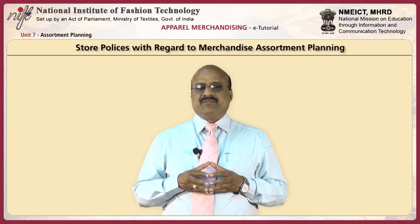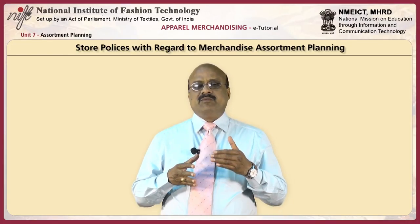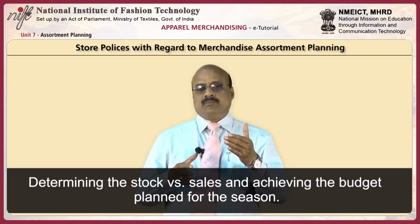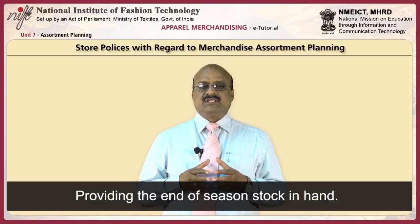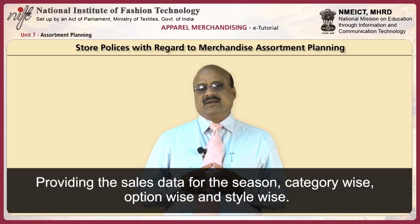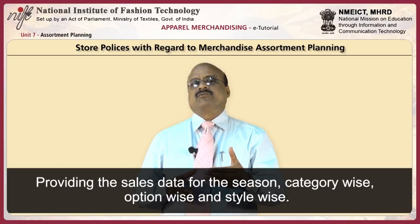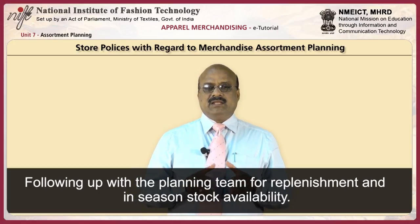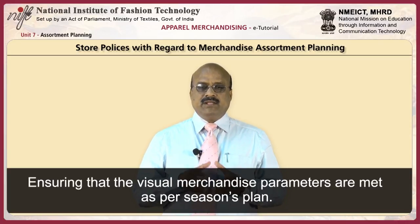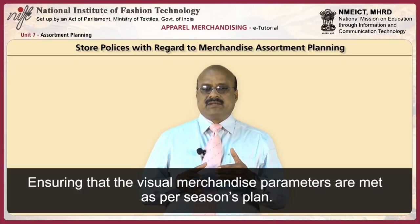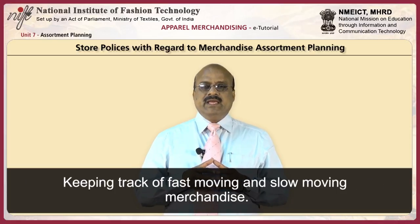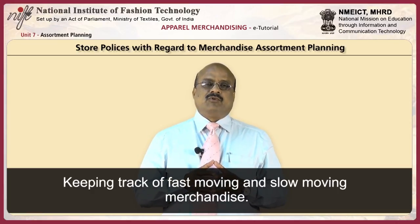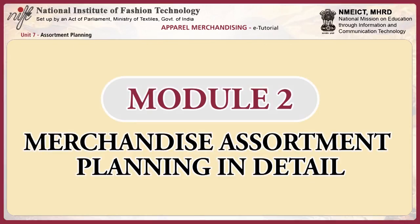Stores play a very major role in assortment planning by determining stock versus sales and achieving the budget planned for the season, providing end-of-season stock on hand, providing sales data for the season category-wise, option-wise, and style-wise, following up with the planning team for replenishment and in-season stock availability, ensuring that visual merchandise parameters are met as per the season's plan, and keeping track of fast-moving and slow-moving merchandise, which gives insights to the planning and buying team in forecasting.